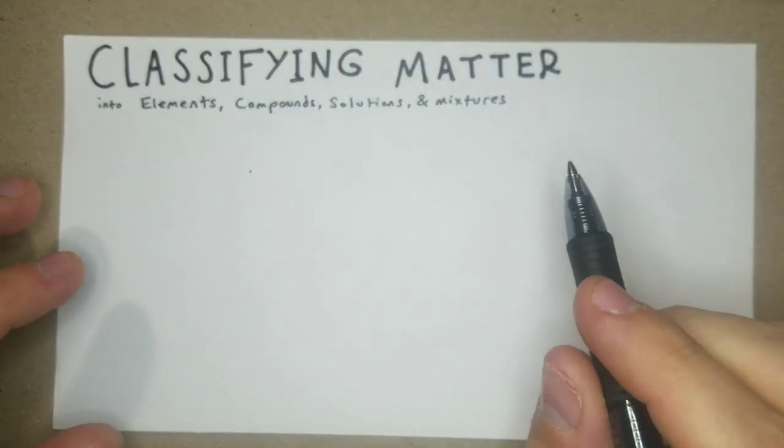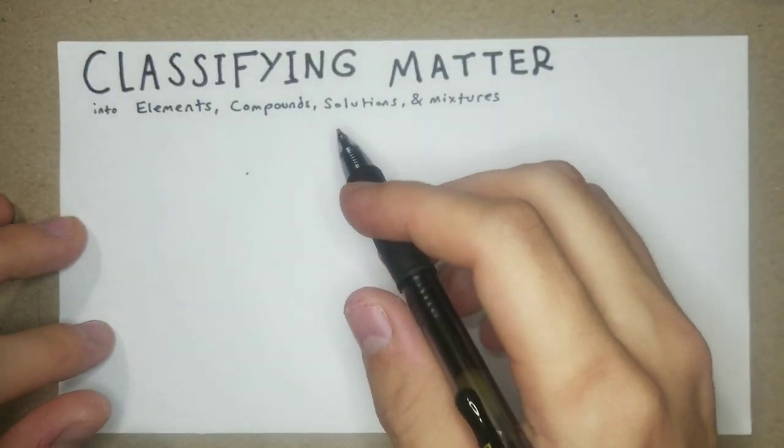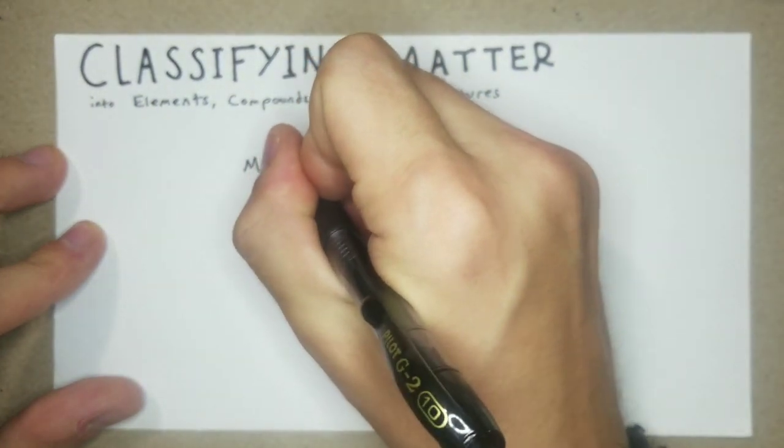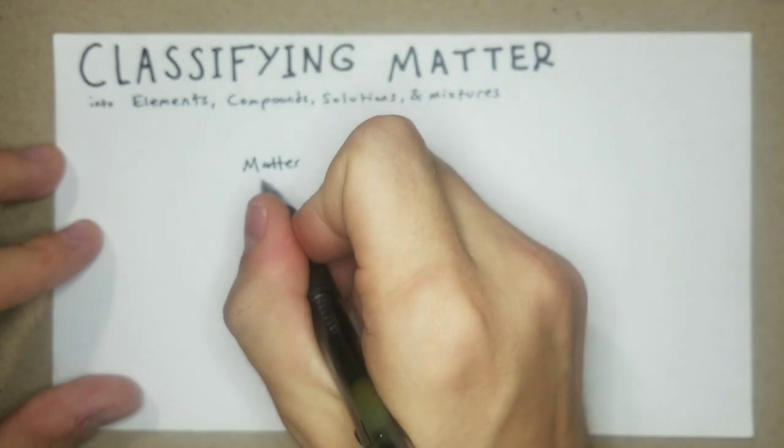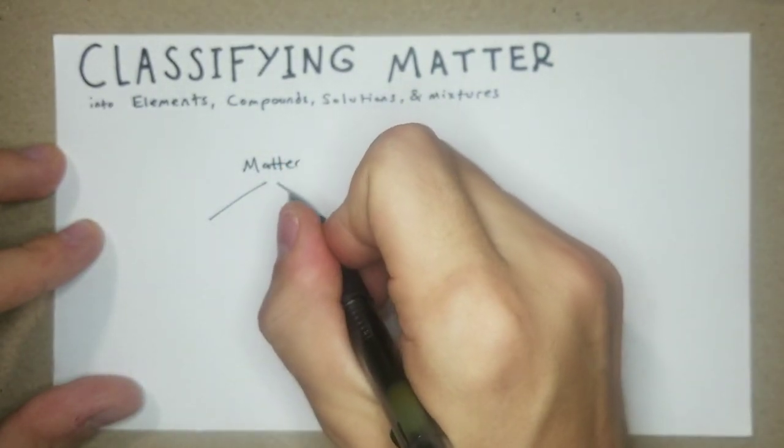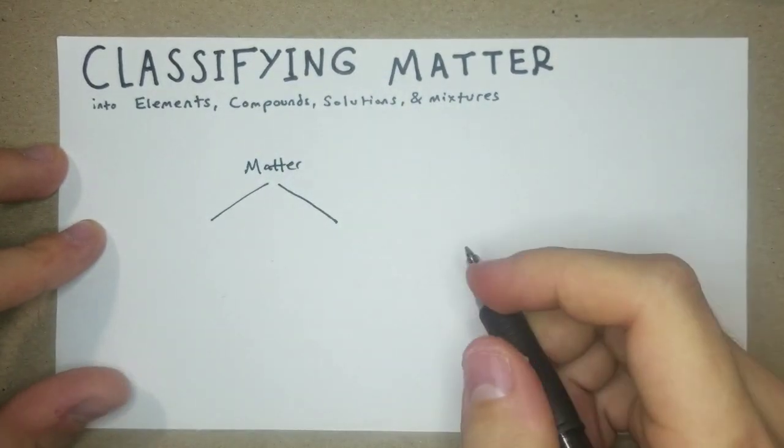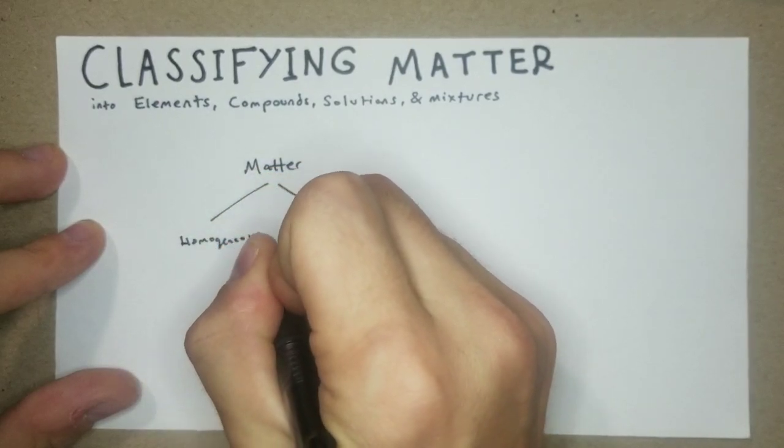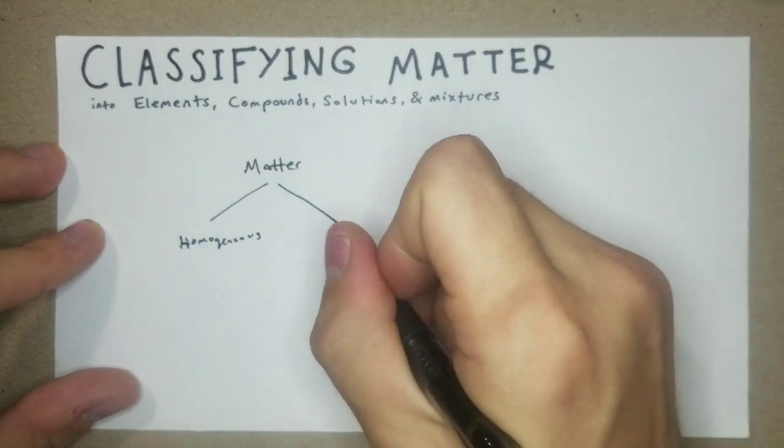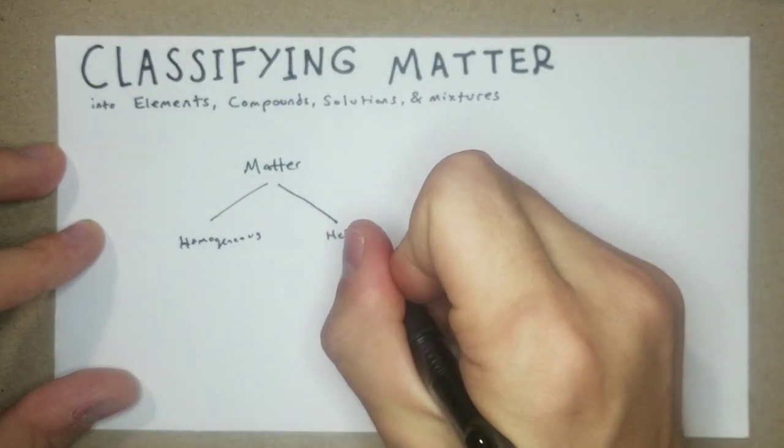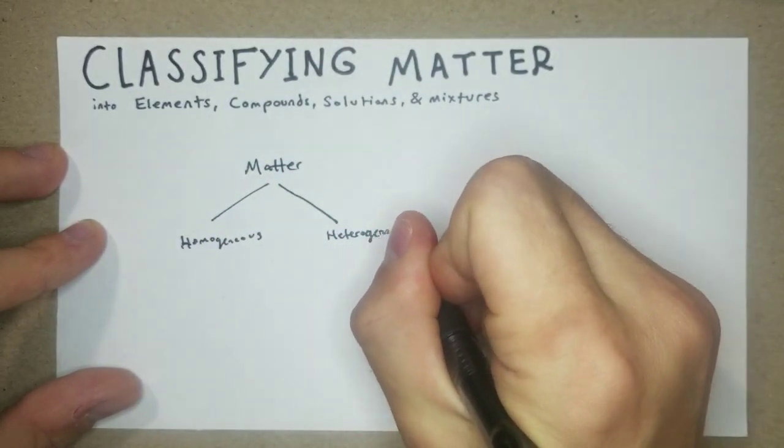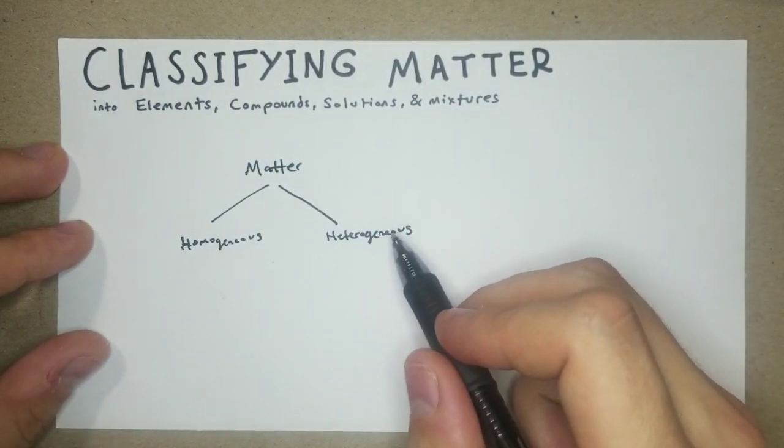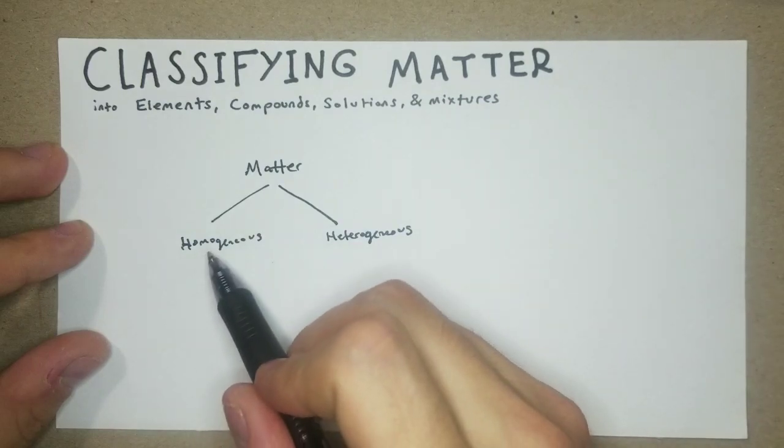We're going to go over some of the classifications of matter and how they're differentiated in chemistry. First I'll just draw the chart. All matter can be separated into these two categories: homogeneous and heterogeneous, basically having visible differences to the naked eye or looking like it's all one thing.